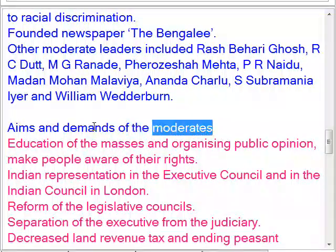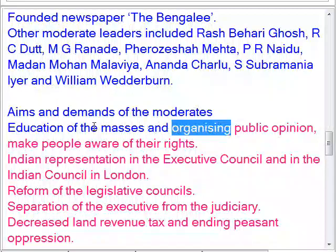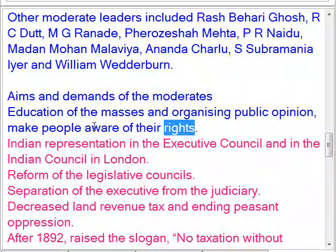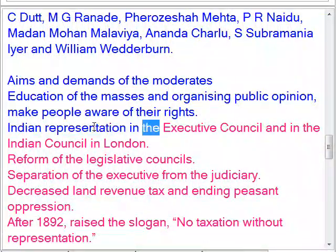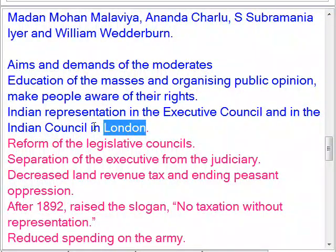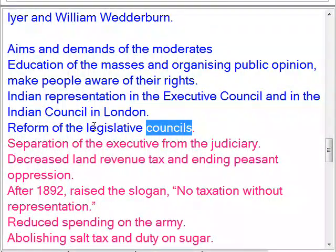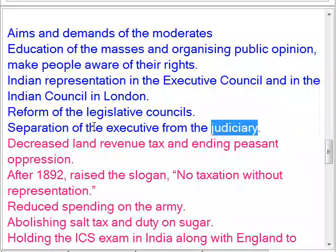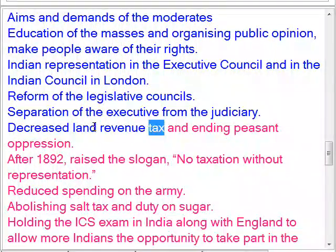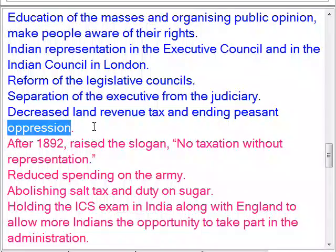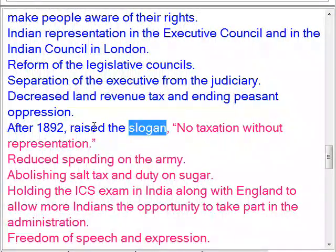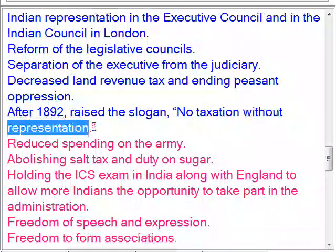Aims and demands of the moderates included education of the masses and organizing public opinion, making people aware of their rights, Indian representation in the executive council and in the India Council in London, reform of the legislative councils, separation of the executive from the judiciary, decreased land revenue tax and ending peasant oppression. After 1892, they raised the slogan 'no taxation without representation.'